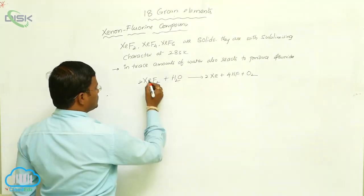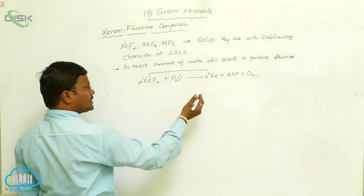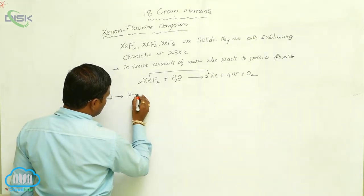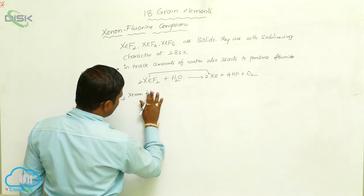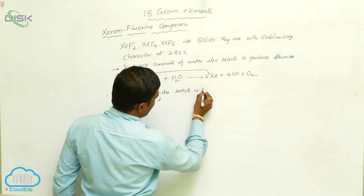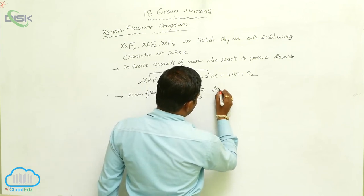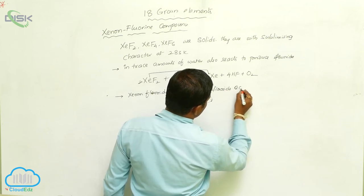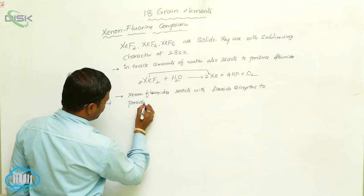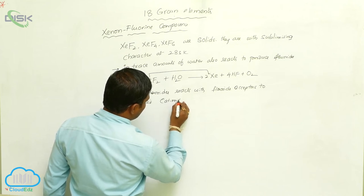We can represent it as the oxidation state of xenon decreasing. So it will be considered as reduction where xenon fluorides react with fluoride acceptors to produce cationic species.